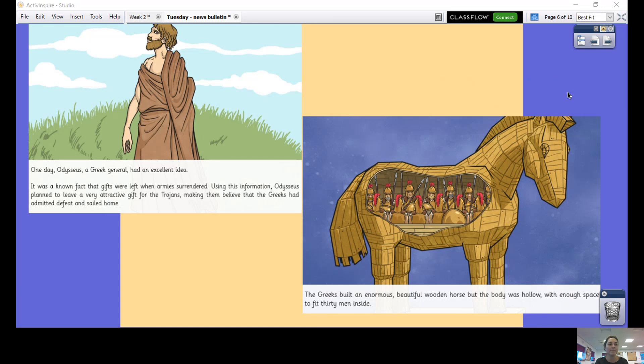One day Odysseus, a Greek general, had an excellent idea. It was a known fact that gifts were left when armies surrendered. Using this information, Odysseus planned to leave a very attractive gift for the Trojans, making them believe that the Greeks had admitted defeat and had just sailed home, that they'd given up. The Greeks built an enormous, beautiful wooden horse.